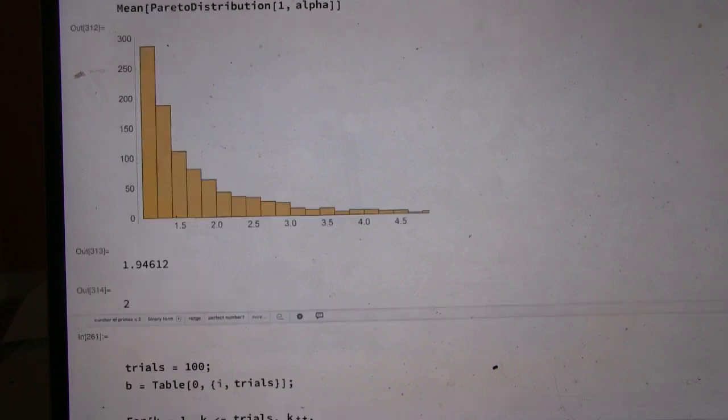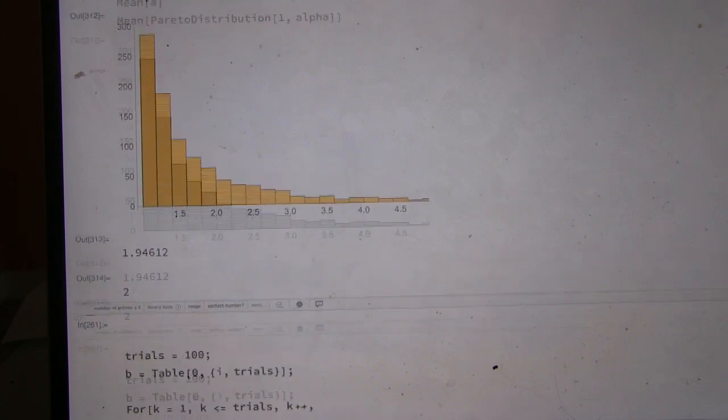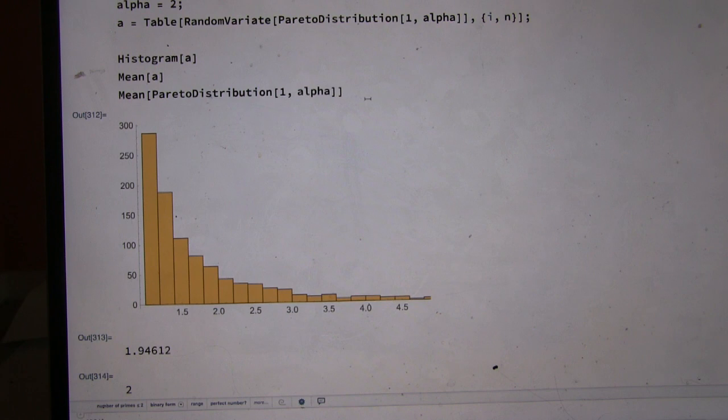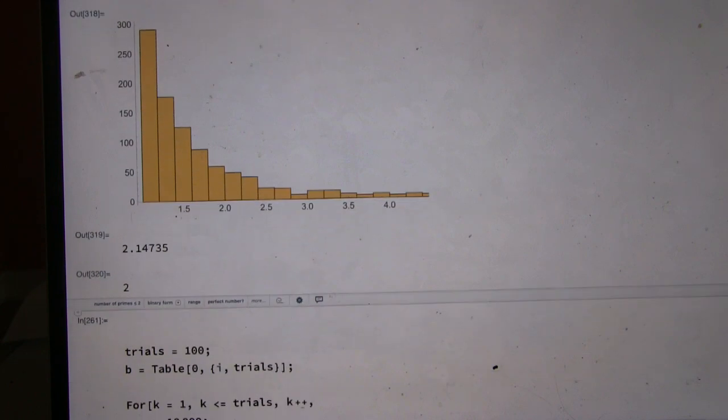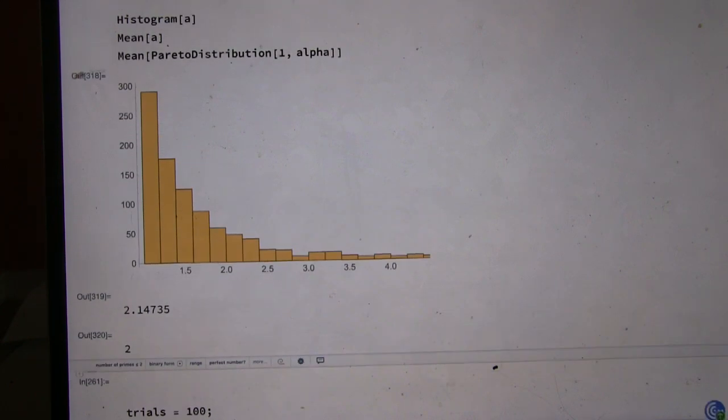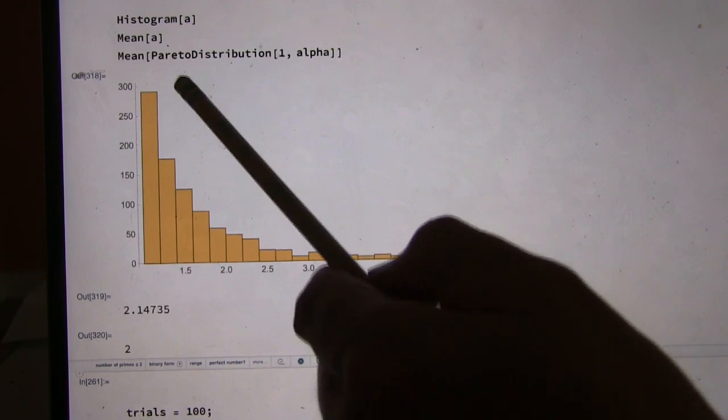So you're pretty close. You're not as close as I thought you would be, but you're still pretty close. Yeah, it's interesting. So with a thousand numbers for this distribution, I do seem to be getting pretty near to 2. And you can see what Nassim was saying with this distribution.